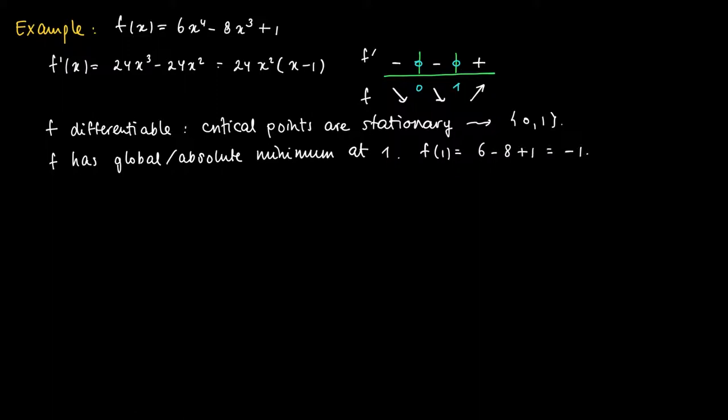So 0 is not an extreme value. Now we try to find the inflection points of the function. In order to find those we need to compute the second order derivative, and the second order derivative is given by 24x times (3x minus 2).